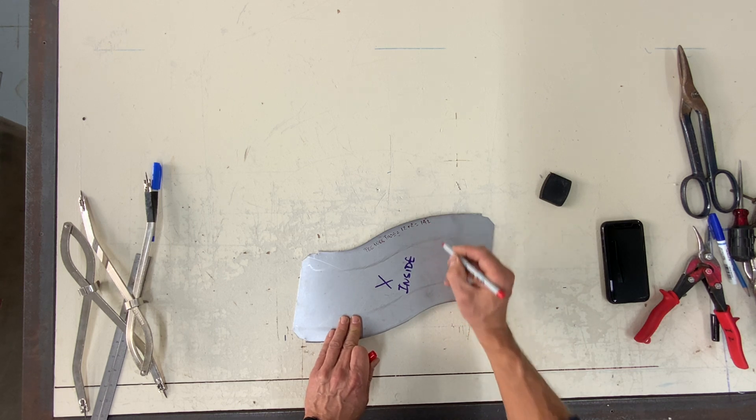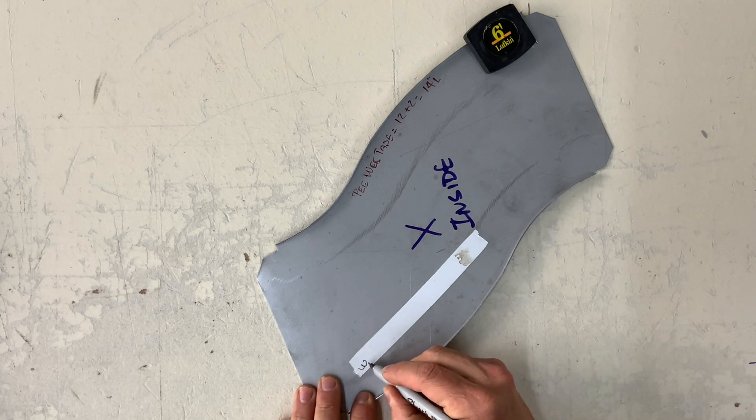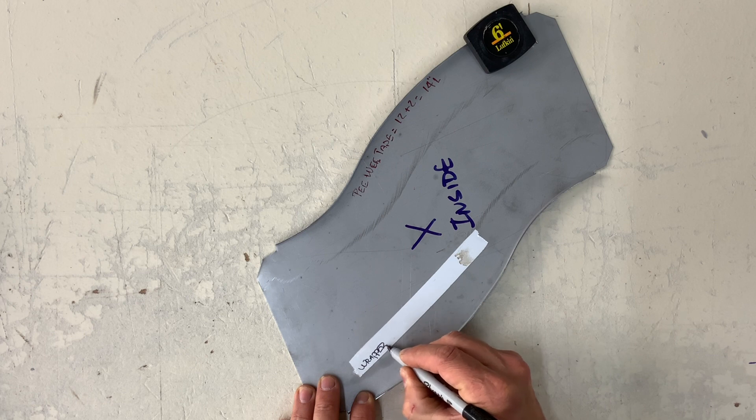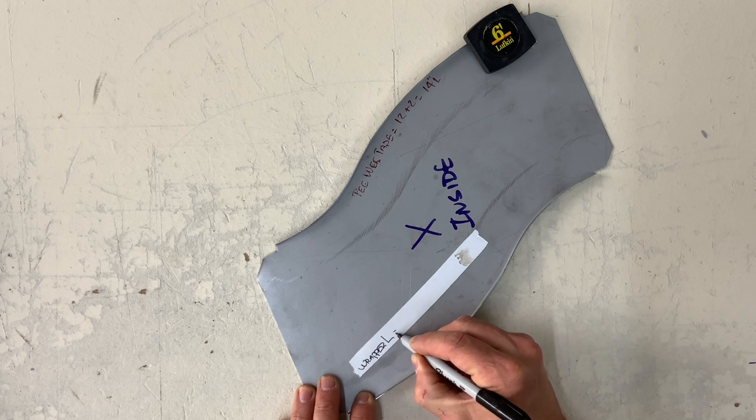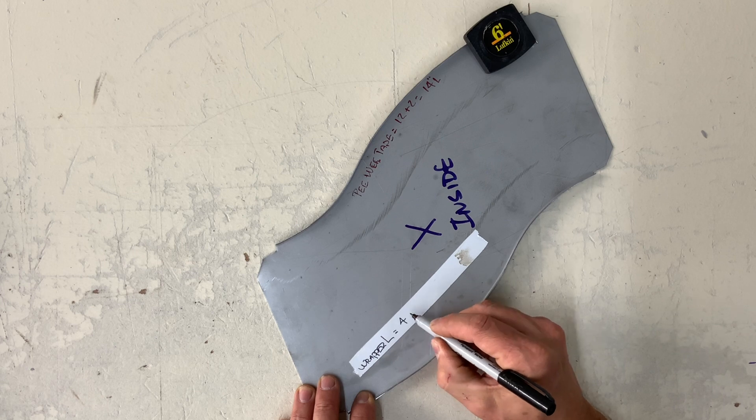So the peewee tape said 12 inches, but that's from working line to working line. Therefore, I have to add another 1 and 1 on each side, meaning the wrapper is 14 inches long using the peewee tape method.